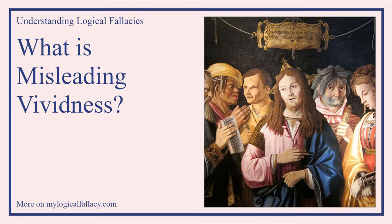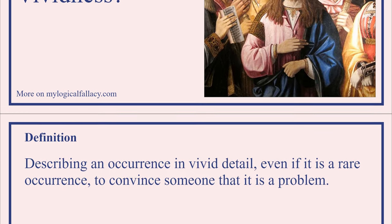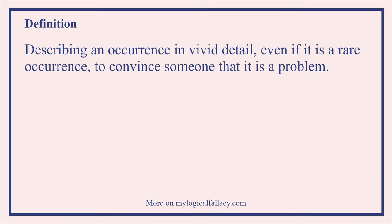What is misleading vividness? Definition: Describing an occurrence in vivid detail, even if it is a rare occurrence, to convince someone that it is a problem.